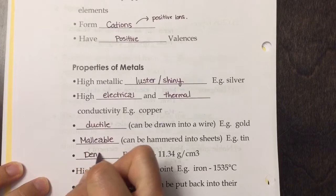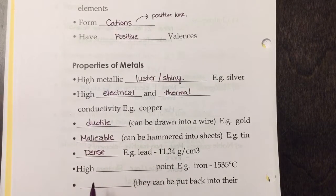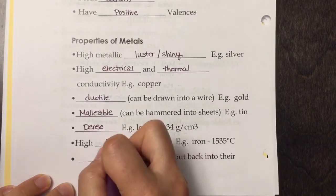They're very dense, which means they're very heavy. They have a lot of atoms in one cubic centimeter. They have high melting points.